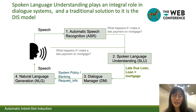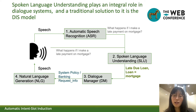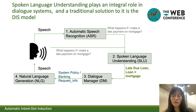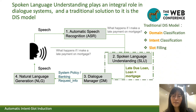Why are we doing Automatic Intent-Slot Induction? For those of you who are not very familiar with Dialog Systems, here I show a schematic figure. For example, the user asks what happens if I make a late payment on a mortgage. The input can be in voice format or text format. Either way, it goes to the spoken language understanding module for user intent analysis. A traditional solution for spoken language understanding is called the DIS model. We need to do domain classification, intent classification, and slot filling.